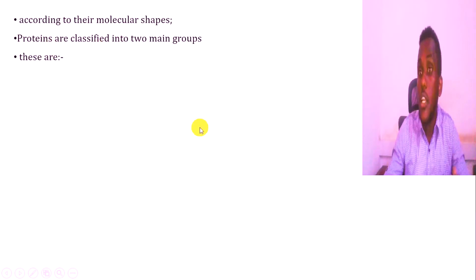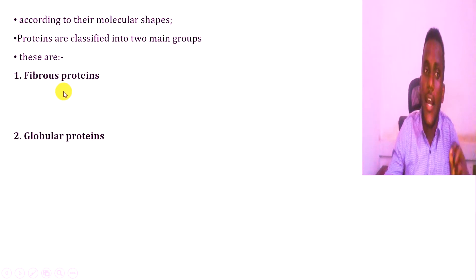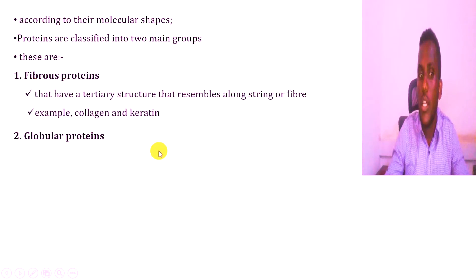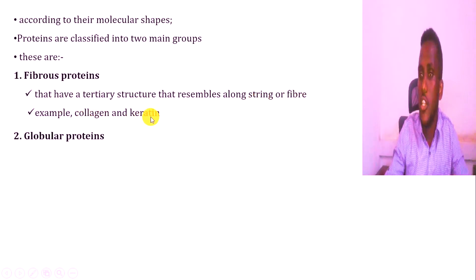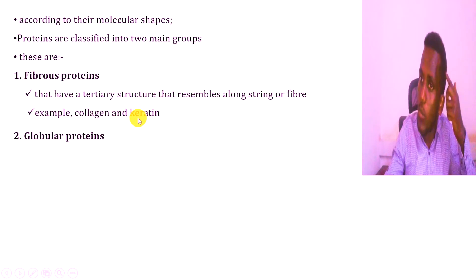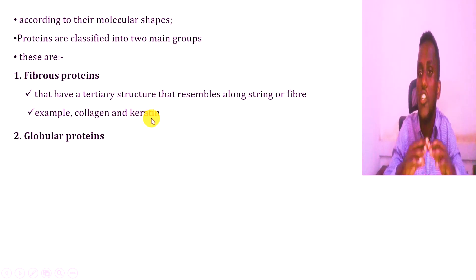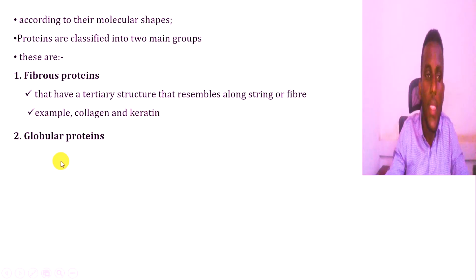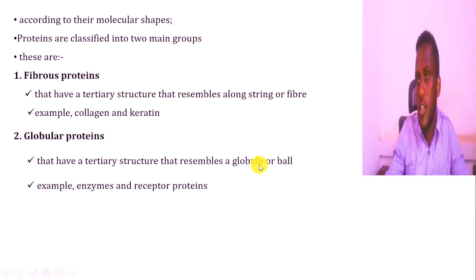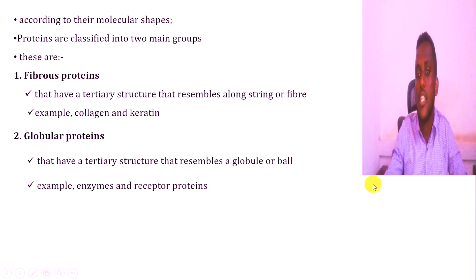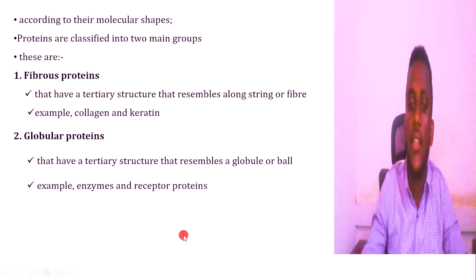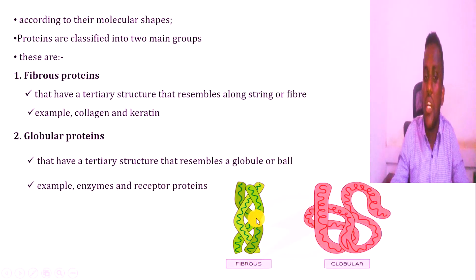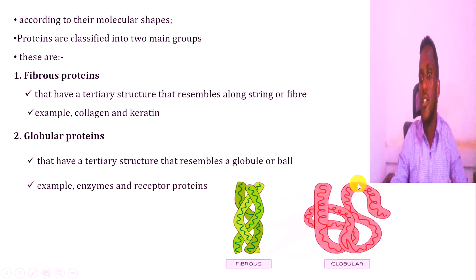According to molecular shape, proteins are classified as fibrous or globular proteins. Fibrous proteins have a string-like or line form. Collagen is an example of a fibrous protein, made of polypeptide chains coiled together in a string-like structure. Another example mentioned is receptor protein, which has a defined structural shape.